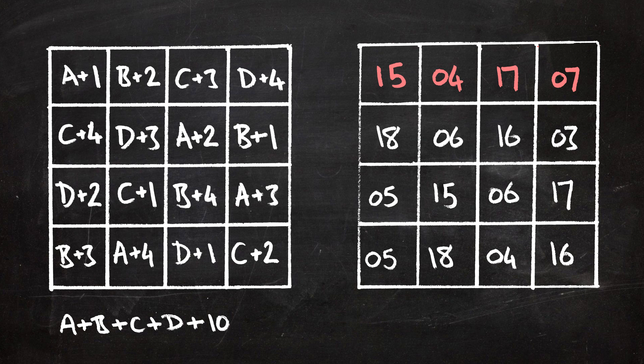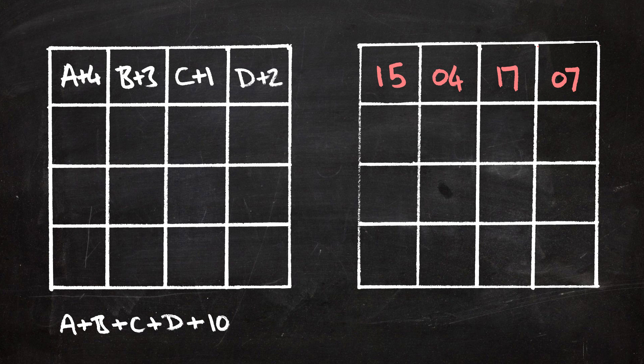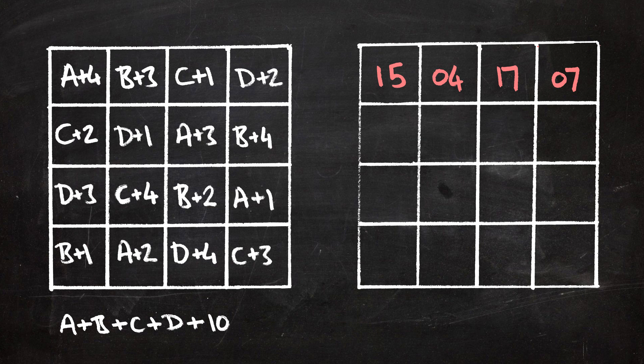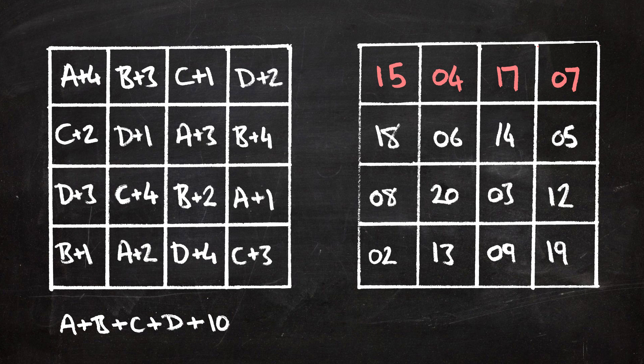As an extra challenge, you might try to create a birthday magic square without any repeated values, or as few repeated values as possible. Let's see if I can do that for Euler's birthday. What I'm going to do is change the order of 1, 2, 3, 4. So let's try making a new Euler square, but this time in the top row using 4, 3, 1, 2. If I make my Euler square just as before and then use it to make a birthday magic square, I find that I can make one without any repeated values.